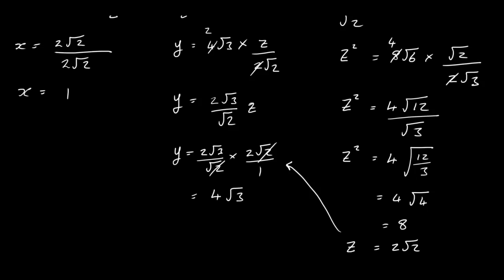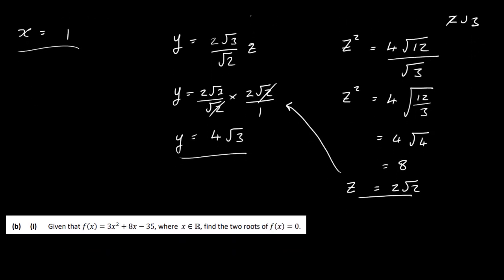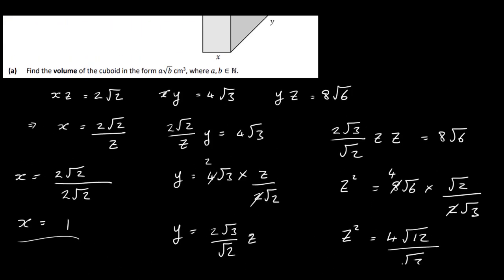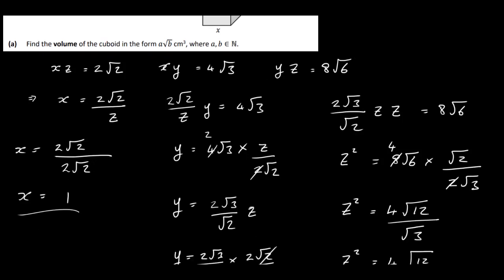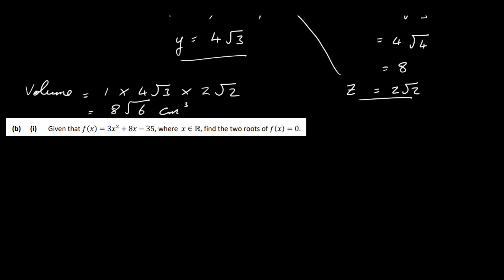Now the question says find the volume. Volume = length × width × height = 1 × 4√3 × 2√2. That gives 4 × 2 = 8, and √3 × √2 = √6. So the volume is 8√6 cubic centimeters. The question asks for the answer in the form a√b where a and b are natural numbers, and we can see that 8 and 6 are both natural numbers. That's the answer to Part a.